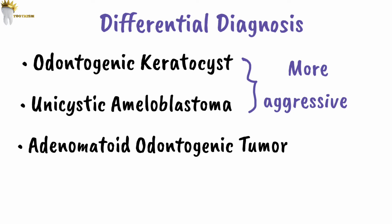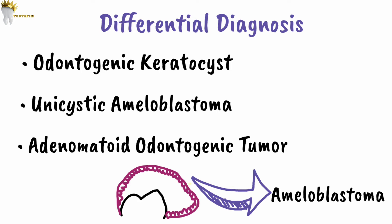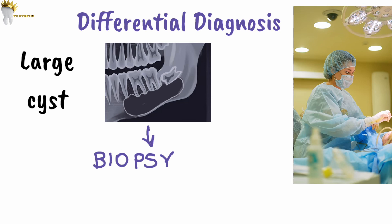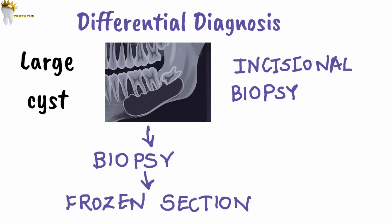Differential diagnosis is very important. An important feature of dentigerous cysts is that the lining epithelium contains cells capable of forming ameloblastoma, making dentigerous cysts a known source of ameloblastoma. Surgeons differentiate between these lesions intraoperatively by taking a biopsy and sending it for frozen section, allowing identification of the lesion type during surgery. Another option is performing an incisional biopsy before surgery.